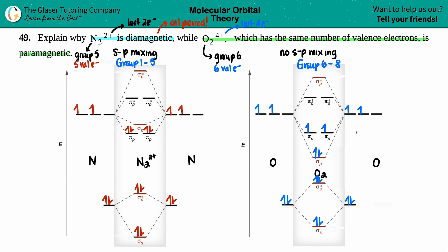And this, since you have at least one unpaired, that's paramagnetic. If you're ending on an unpaired, that's paramagnetic. But if you're ending on all pairs, that's diamagnetic.